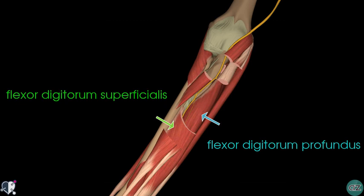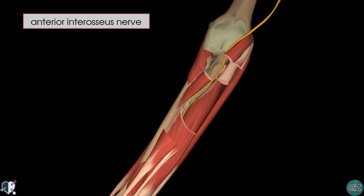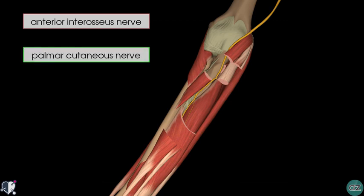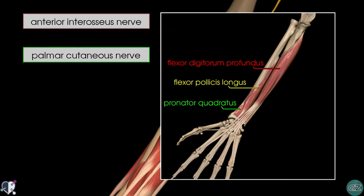There are two major branches which come off the median nerve in the forearm. Proximally you've got the anterior interosseous nerve, and distally you've got the palmar cutaneous nerve. The anterior interosseous nerve supplies the deep flexor muscles of the anterior compartment: these include the flexor pollicis longus, the pronator quadratus, and the lateral half of the flexor digitorum profundus muscle. The medial half of this muscle is innervated by the ulnar nerve.